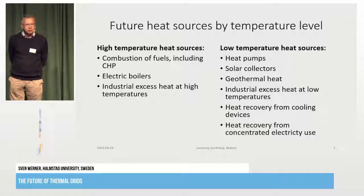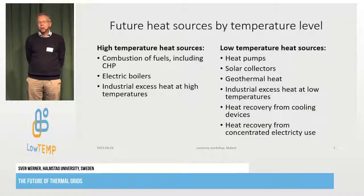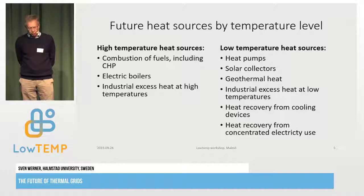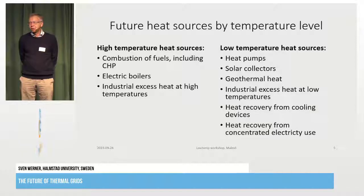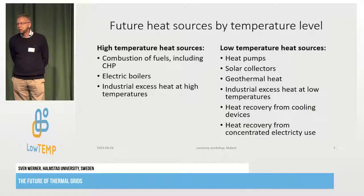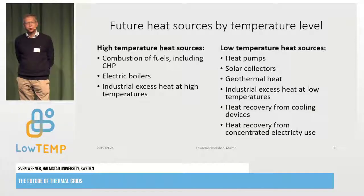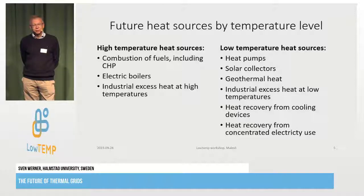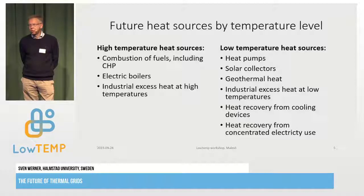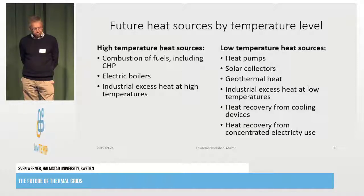We have to see what kind of heat sources we have — which ones are high temperature and which ones are low temperature. All combustion fuels are high temperature. When you burn a fuel you get temperatures between 1000 and 1800 degrees, so it's easy to supply heat to a building that requires maybe 30 or 40 degrees. We also have electric boilers that can generate high temperatures, and some industrial excess heat at high temperatures.